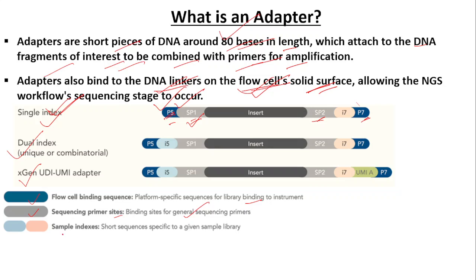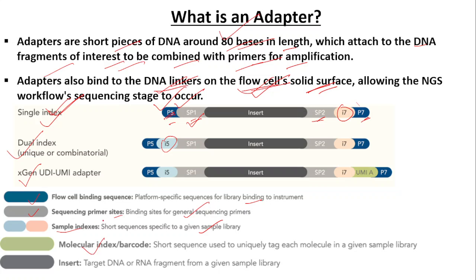The next part is sample indexes — short sequences specific to a given sample library. Then there is the molecular index, also called a barcode or UMI. The molecular index is a short sequence used to uniquely tag each molecule in a given sample library. And in the middle is the insert, which is the target DNA or RNA fragment from the given library.